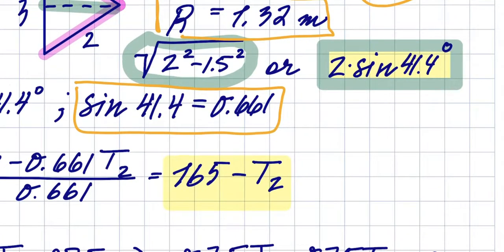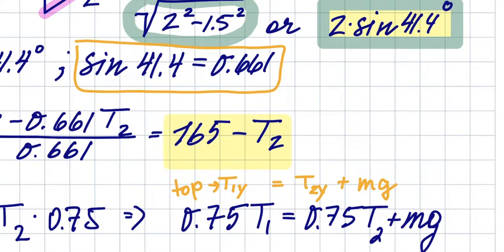Then I have that. So this is my T1y equals T2y plus mg, because this is the top rope and it's supporting the tension from the bottom—the tension from the bottom and force of gravity.